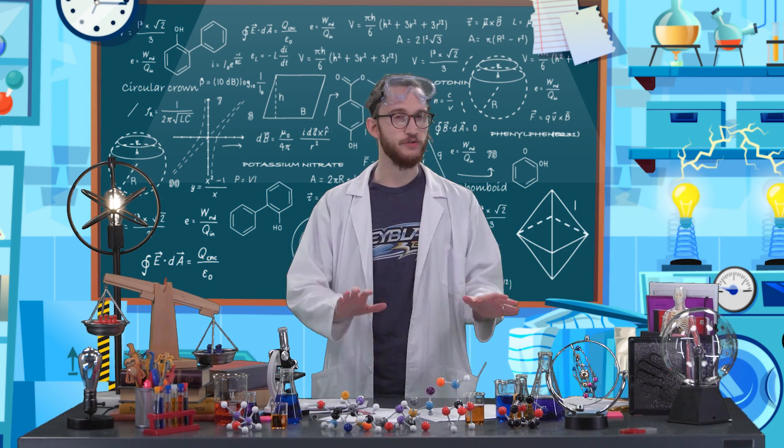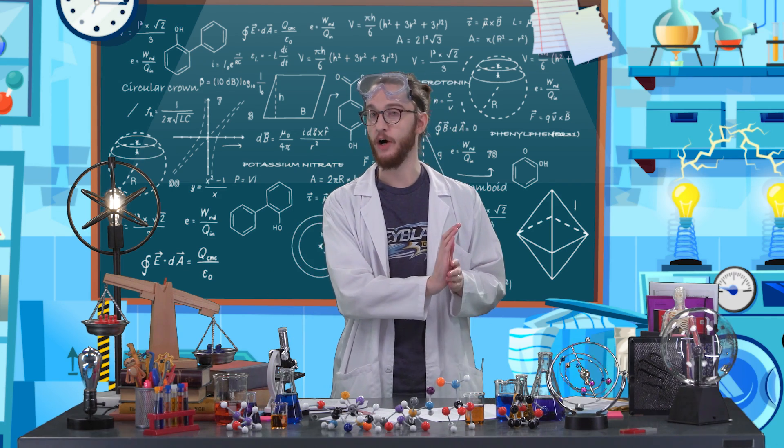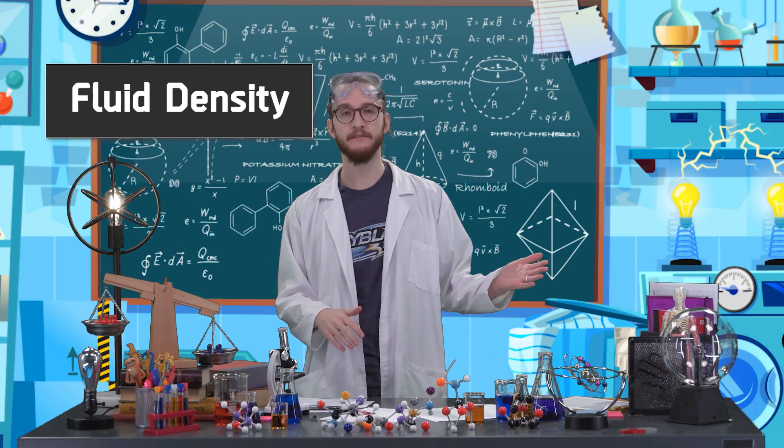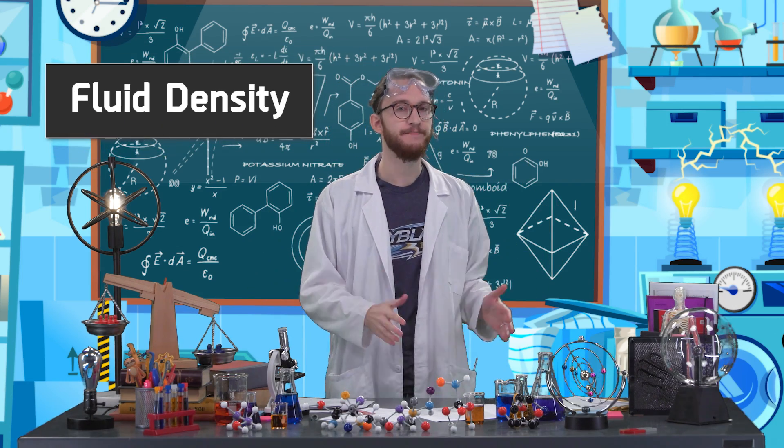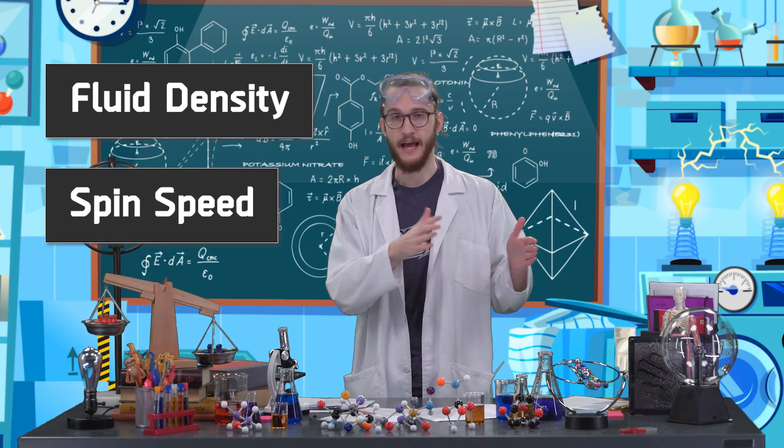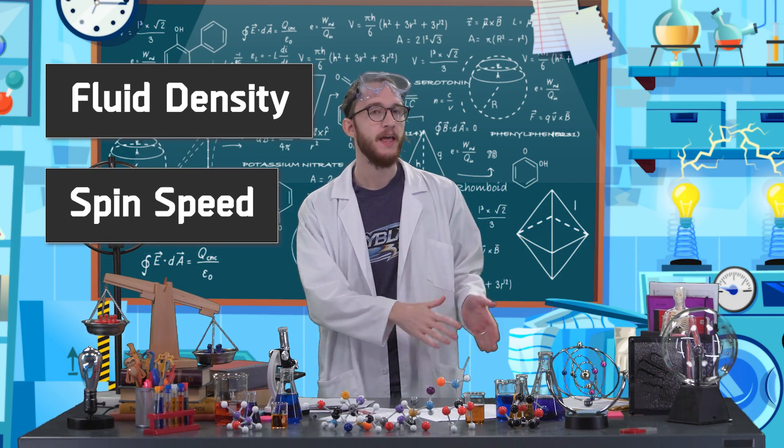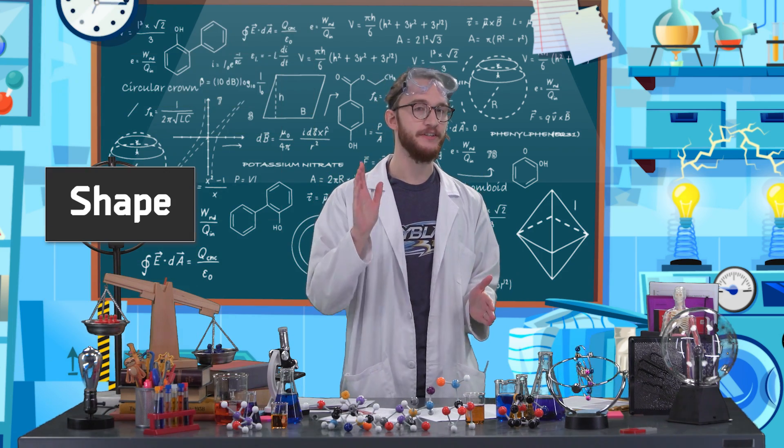Drag is a resisting force that acts opposite the motion of an object. Drag is affected by a few elements like fluid density, how dense the fluid or air is around the object; spin speed, how fast the object is moving or spinning through the fluid; and shape. But today we're going to focus on the shape of an object.